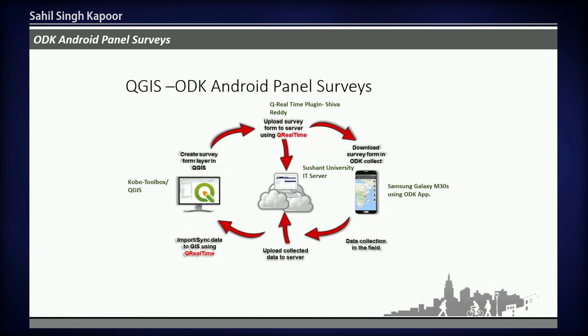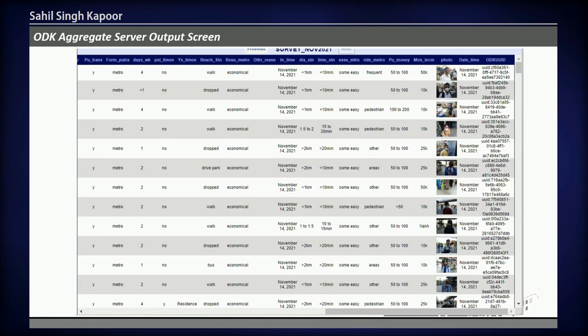This is the overall flowchart of the QGIS-ODK Android panel surveys. Initially I was given access to the Sushant University ODK aggregate server with live access. I used the KoBoCollect app to design my questionnaire, which was imported into QGIS, and from QGIS I used the Q real-time plugin app by Shiva Ready to upload my developed questionnaire into my smart mobile phone app.